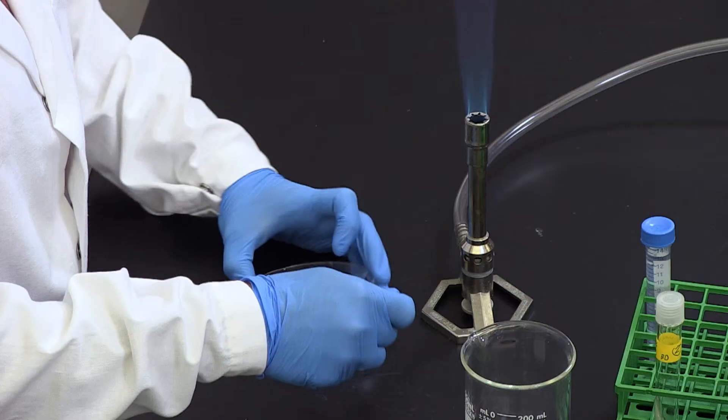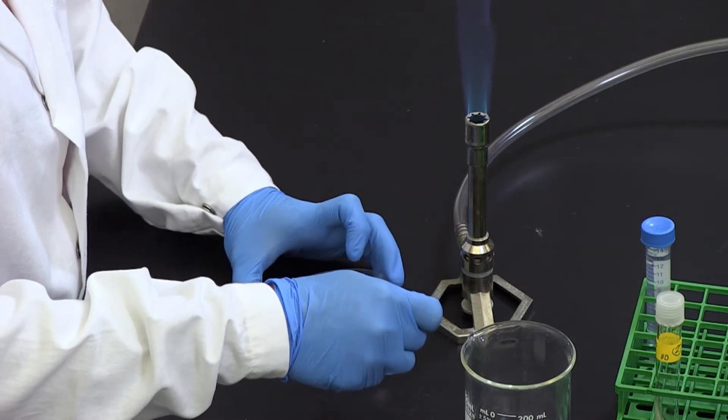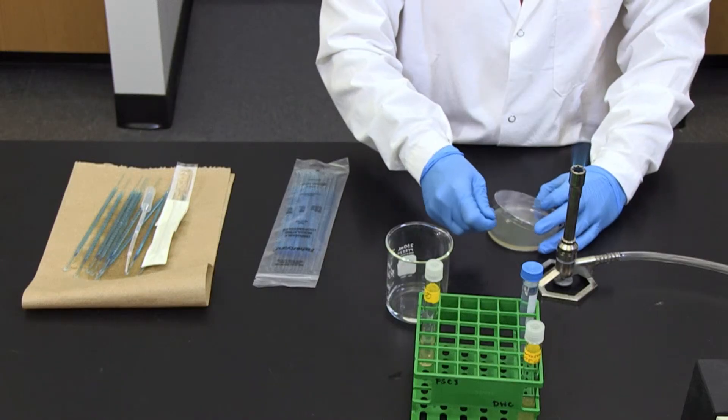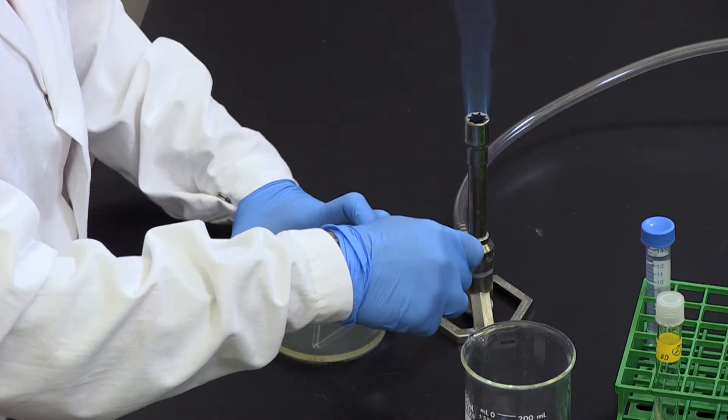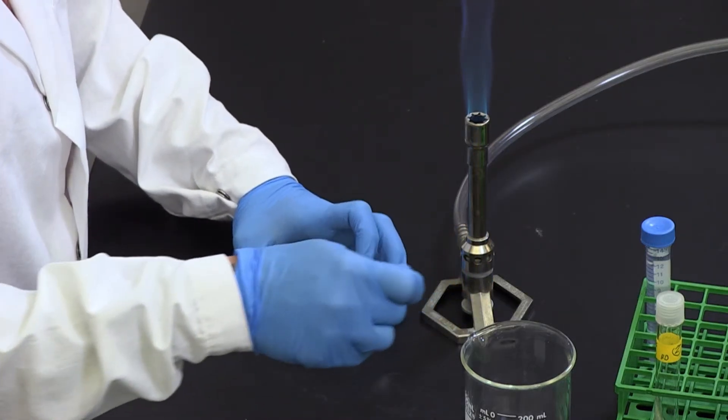Fifth, lightly touch the sterilized cell spreader to the surface of the agar and move it back and forth while turning the plate manually. This ensures the cells are spread evenly over the entire agar surface.